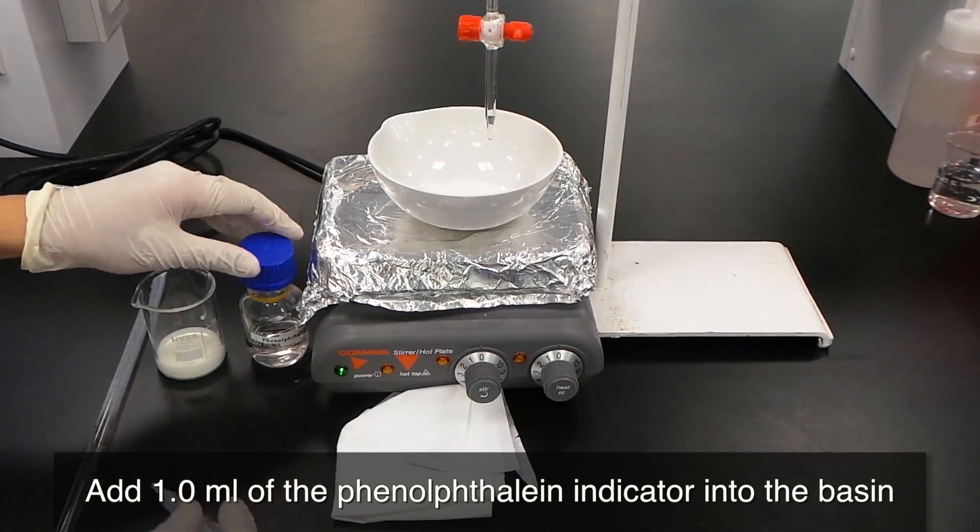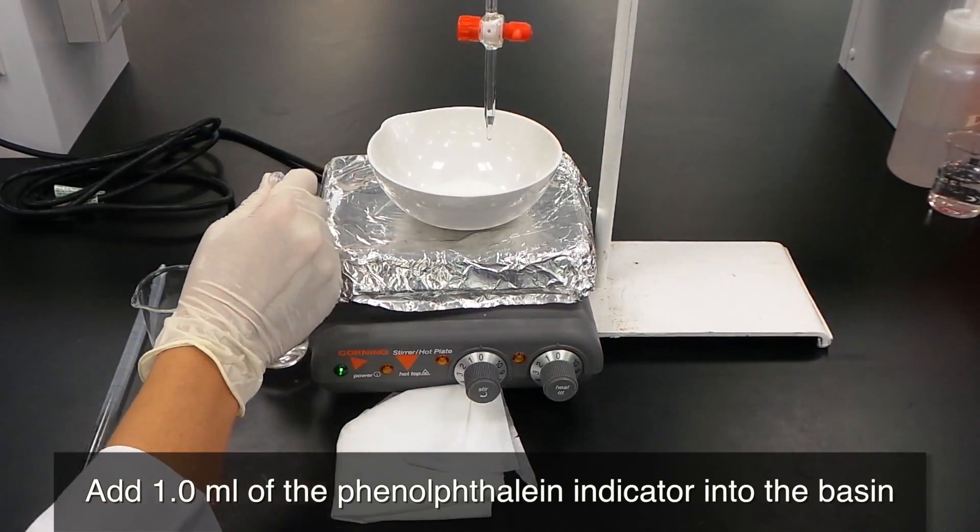Add 1 ml of the phenolphthalein indicator into the basin.